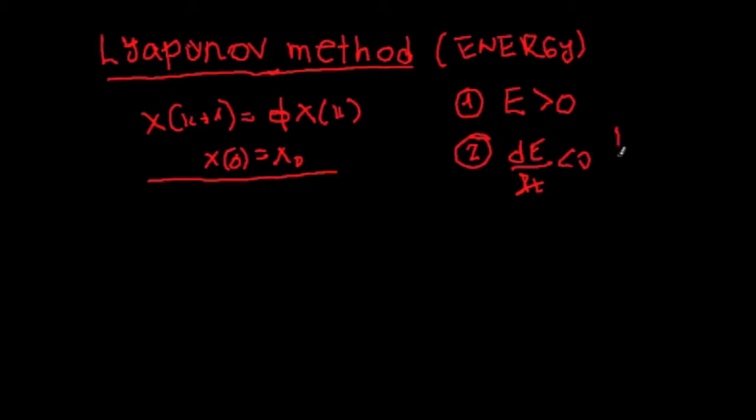So in other words, if I have something like this, the system dissipates, so energy always gets dissipated in the system. So this is the energy and that is reflected in the following expression that dE/dt is less than zero.